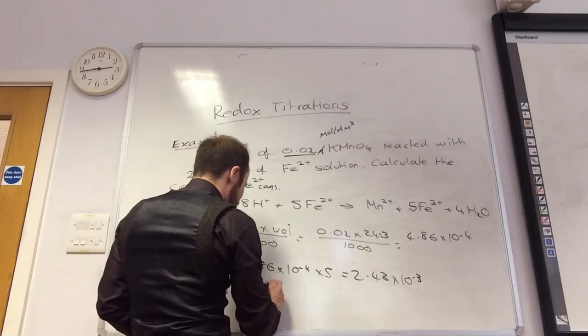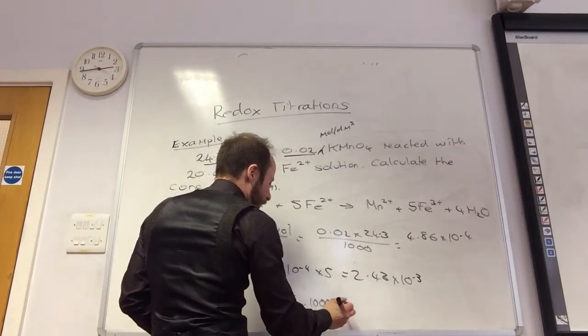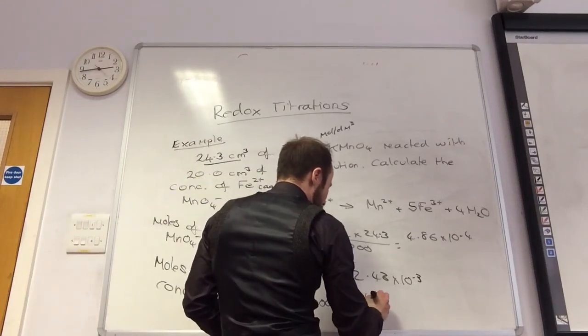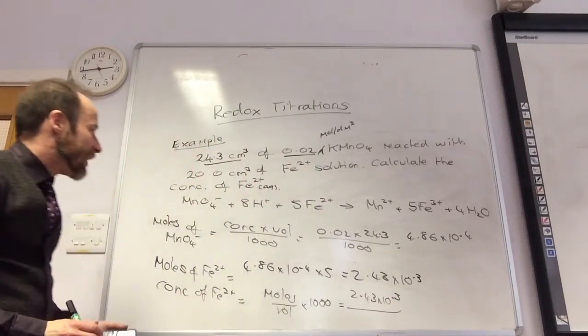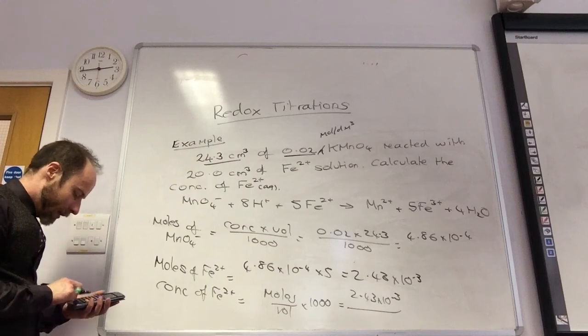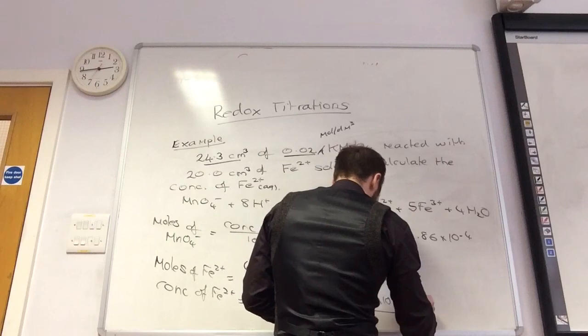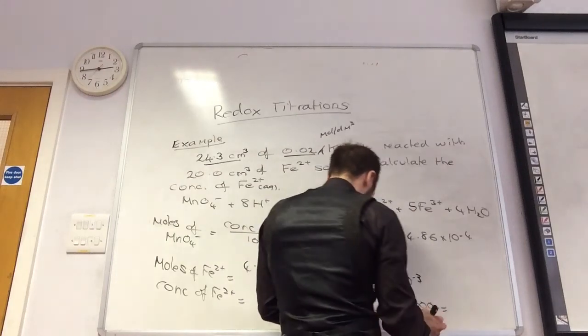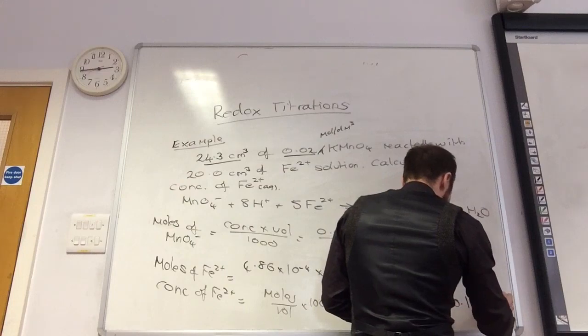Concentration is moles times 1000 over volume. Which is 2.43 times 10 to the minus 3. What volume of Fe2 plus did I have? 20. Yeah, so divide by 20, times it by 1000, and that comes to 0.1215 moles per decilitre.